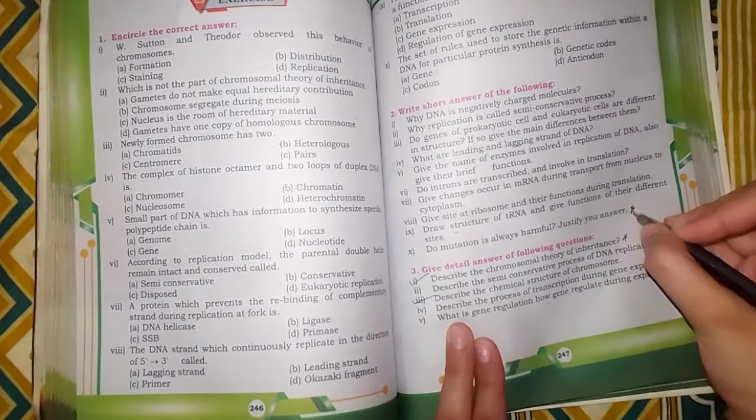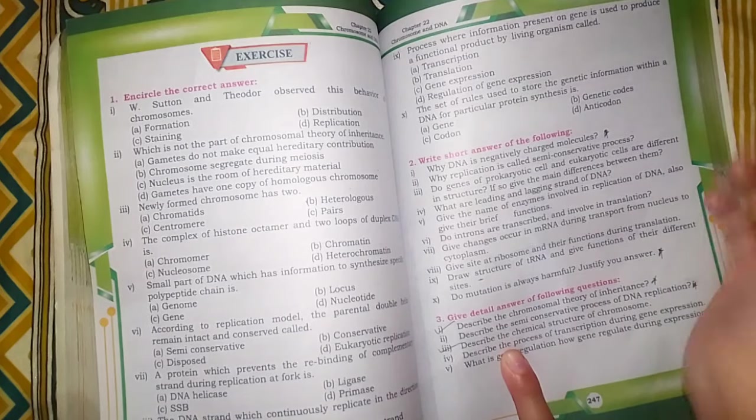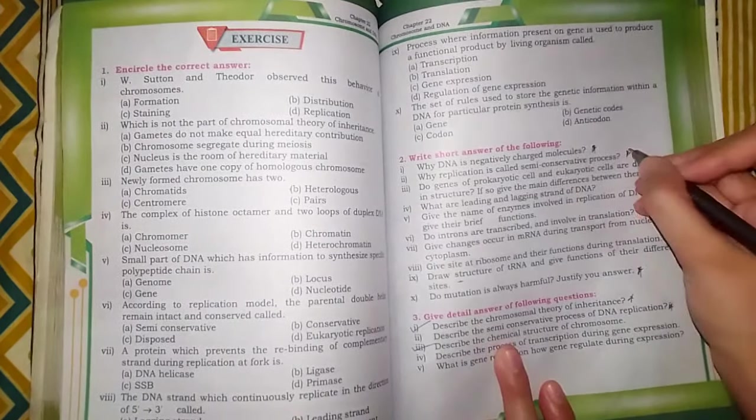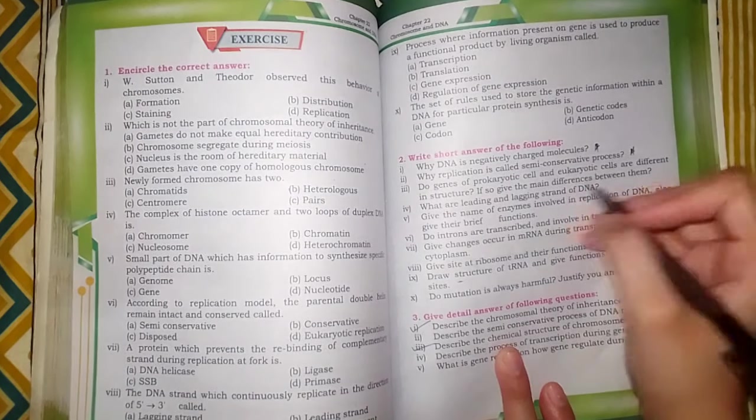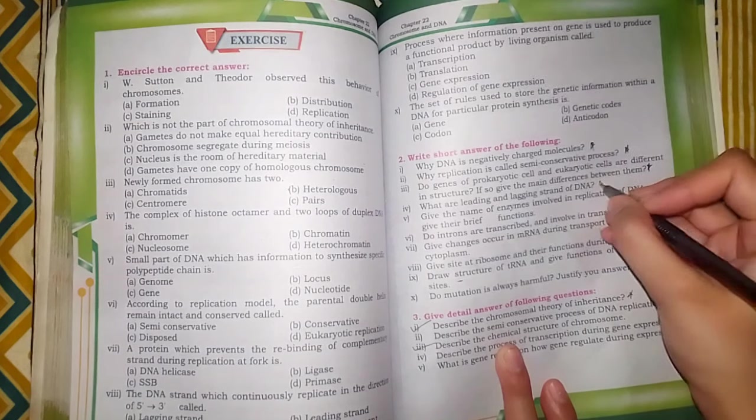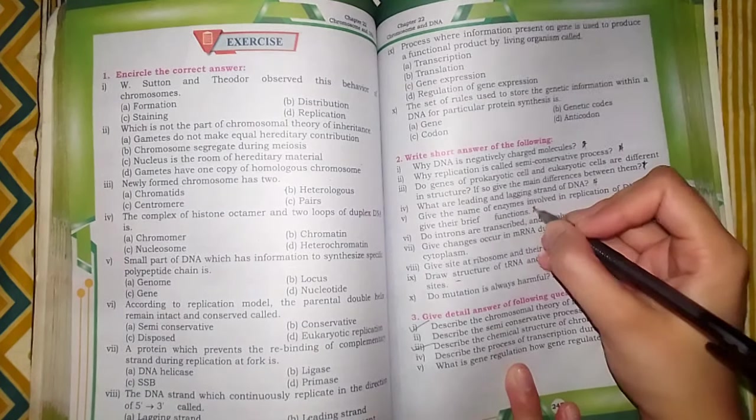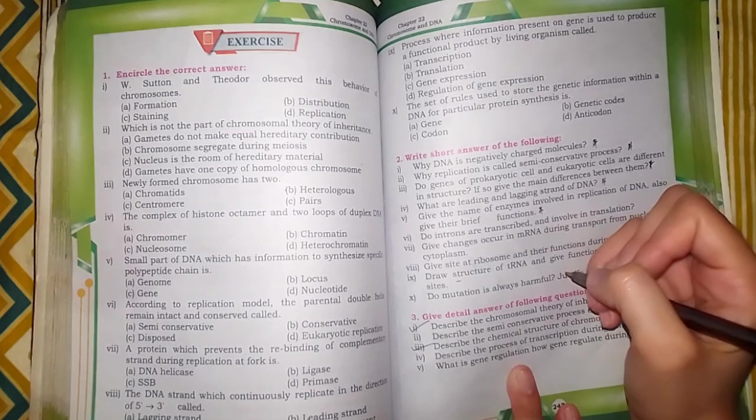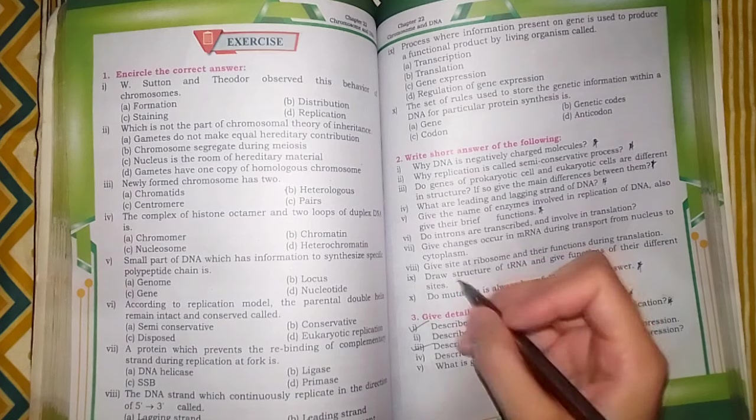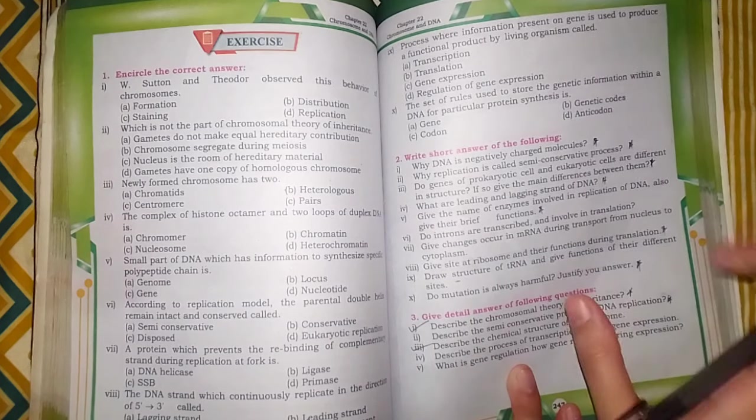Question number 10 and question number 1. Questions here include why DNA is negatively charged molecule, replication is called semi-conservative process, differences between leading and lagging strand of DNA. Give the name of enzymes. These are small questions. And give sites in ribosome.